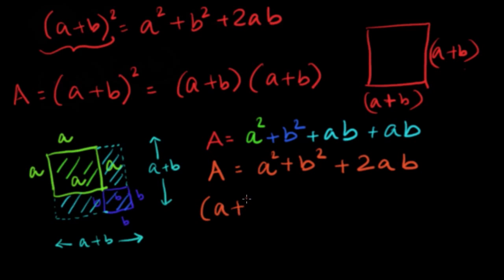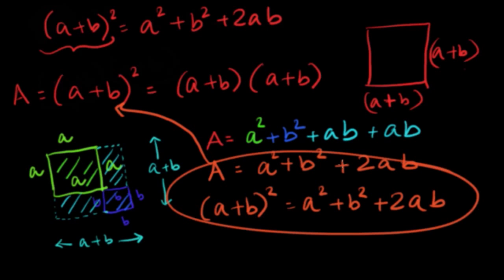And a plus b square is equal to a square plus b square plus 2ab. And that's all.